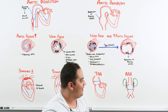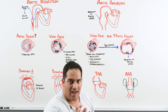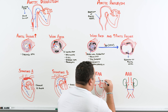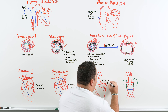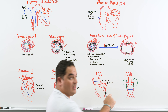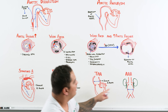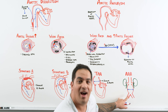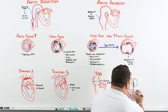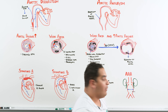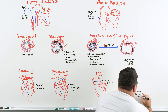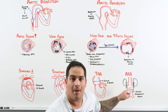More specifically, thoracic aortic aneurysms most commonly involve the ascending aorta. Abdominal aortic aneurysms can form anywhere below the diaphragm, but are most commonly found just below the kidneys — the infrarenal segment. We therefore often call it an infrarenal abdominal aortic aneurysm.